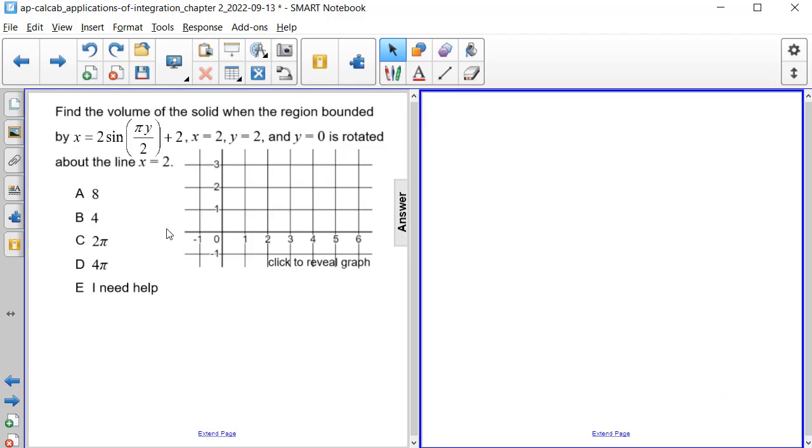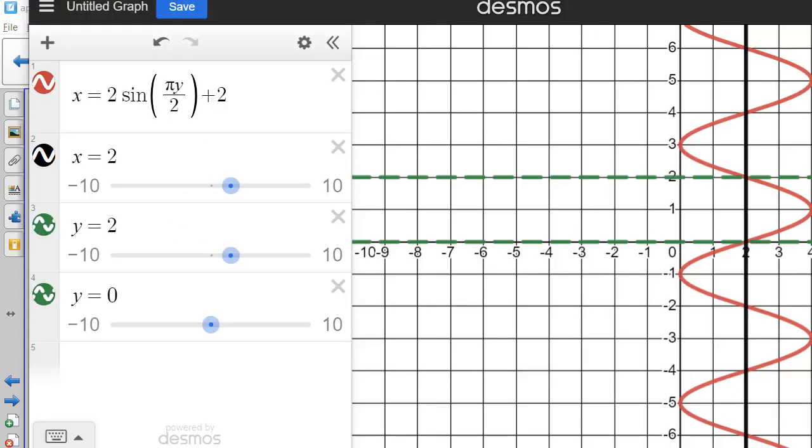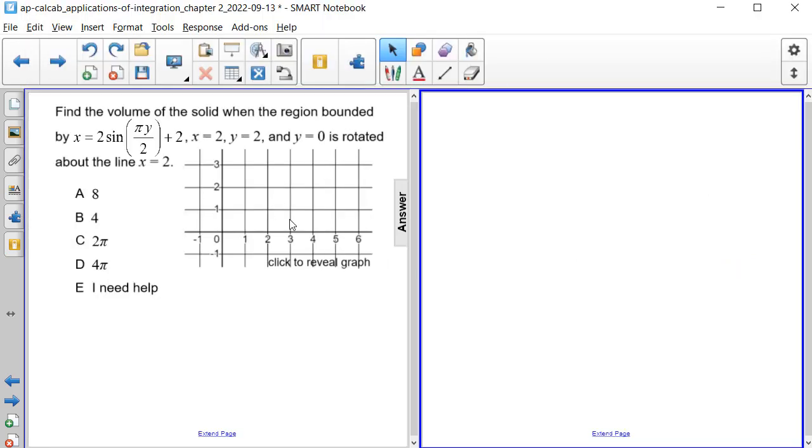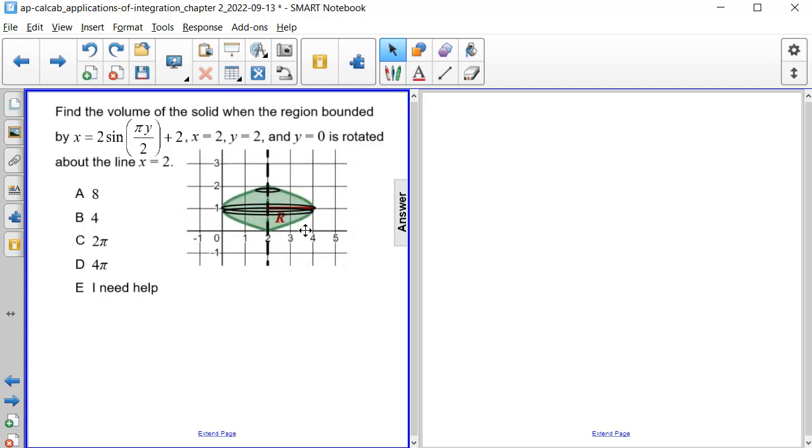And the question is having us rotate about the line x equals 2. So it's in between these two green dotted lines. So it's going to be this region right here being rotated about this axis. In other words, it's going to look something like this.